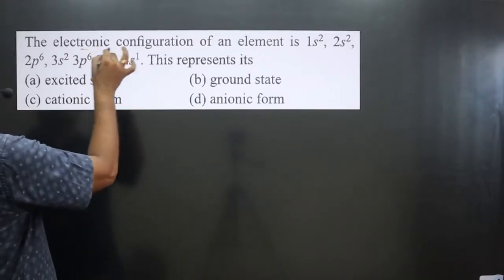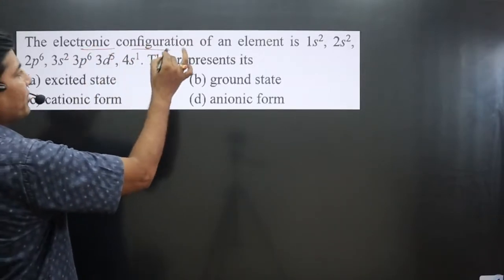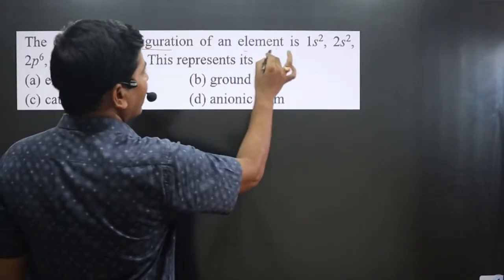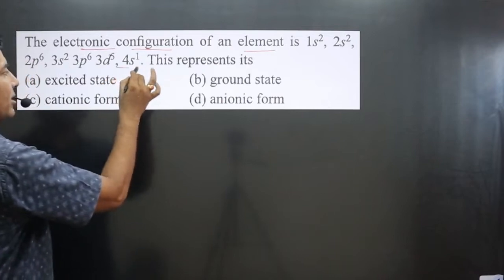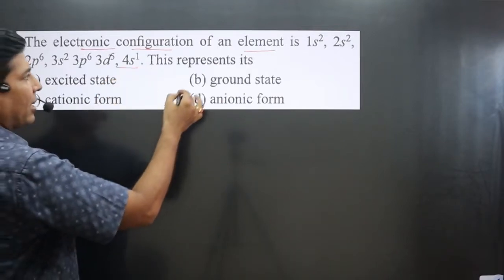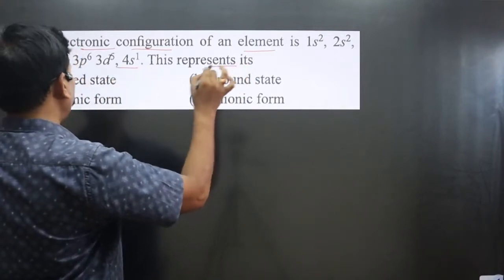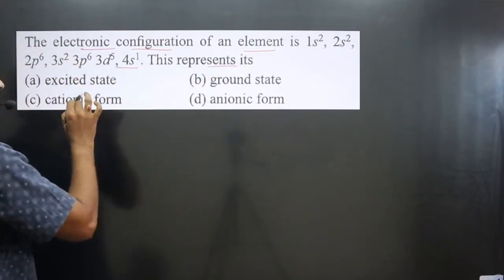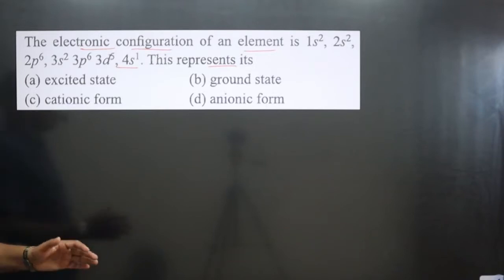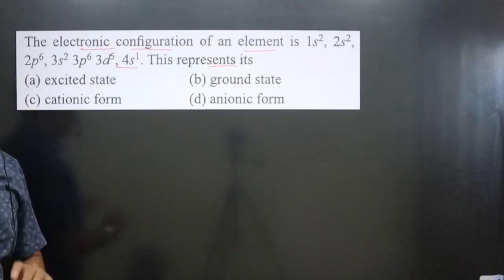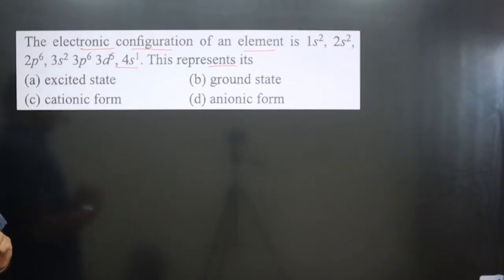The question says the electronic configuration of an element. This is the electronic configuration given here, and this represents its excited state, ground state, cationic or anionic form.